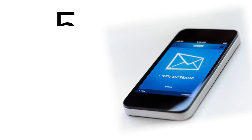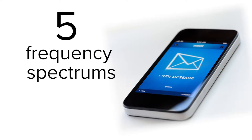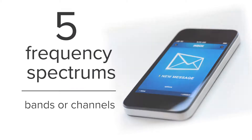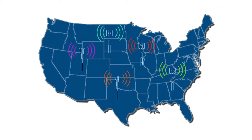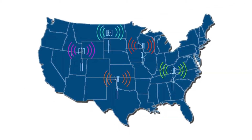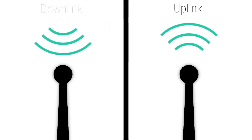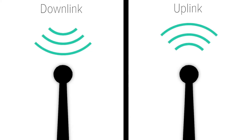Cellular signal is divided up into five frequency spectrums. Each of these spectrums is then divided into bands or channels. Each cell carrier owns and uses different bands and channels throughout the country. Cellular communication uses different channels for uplink and downlink within the same frequency.